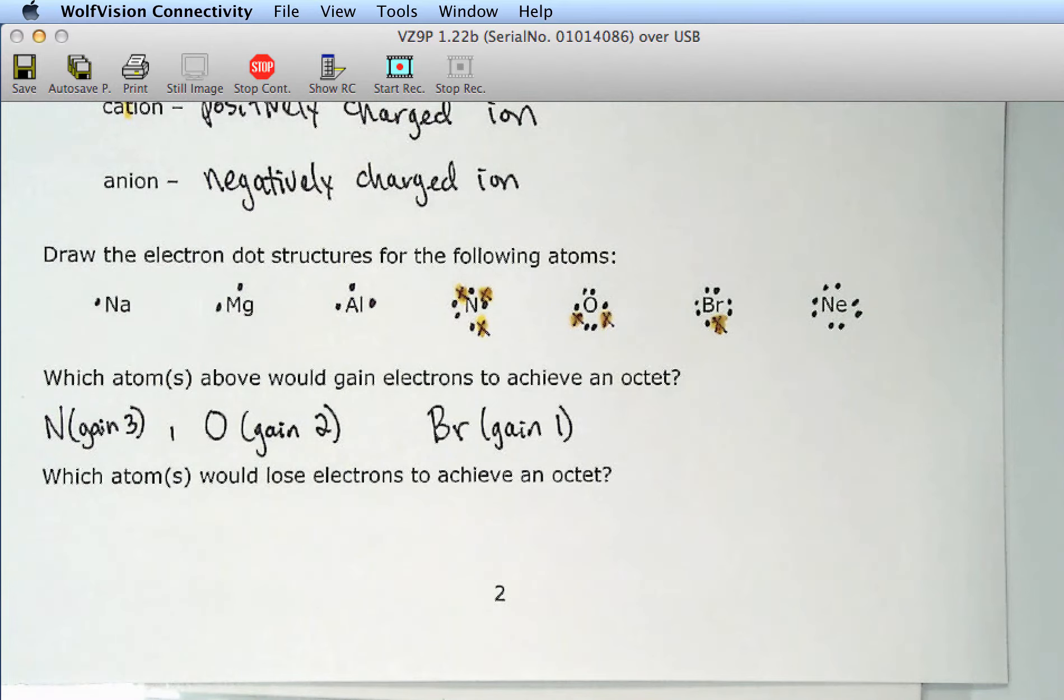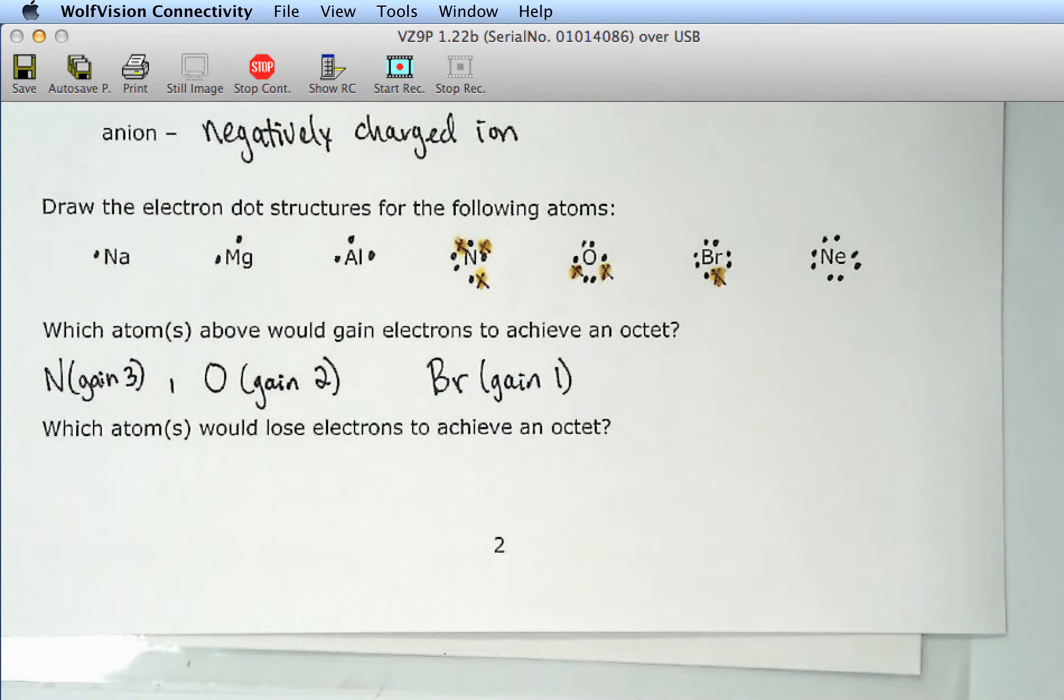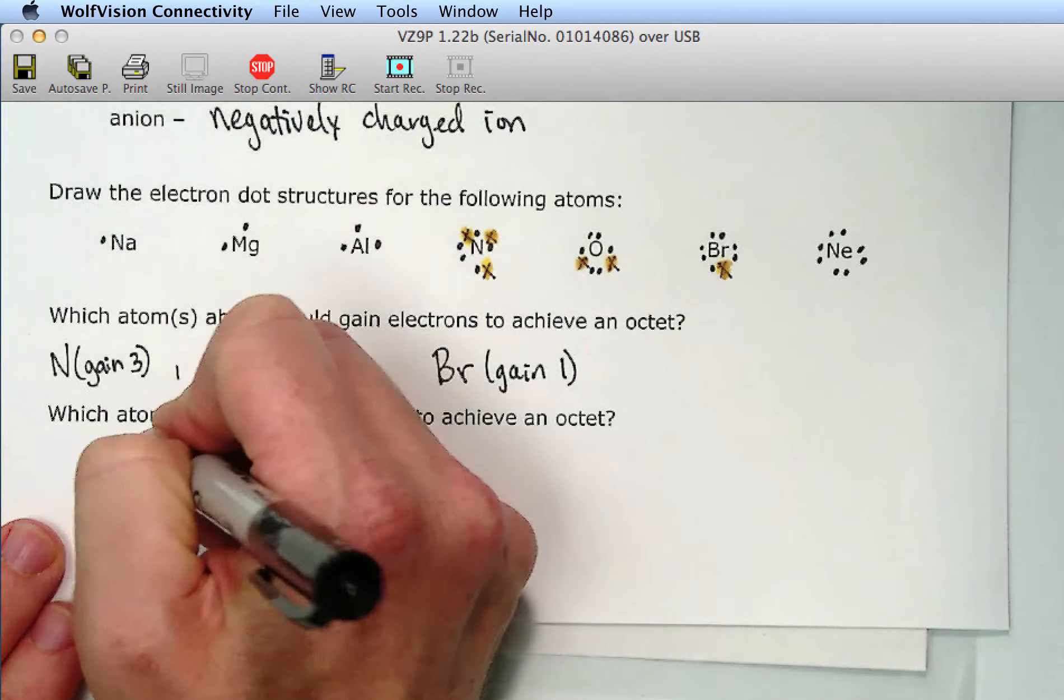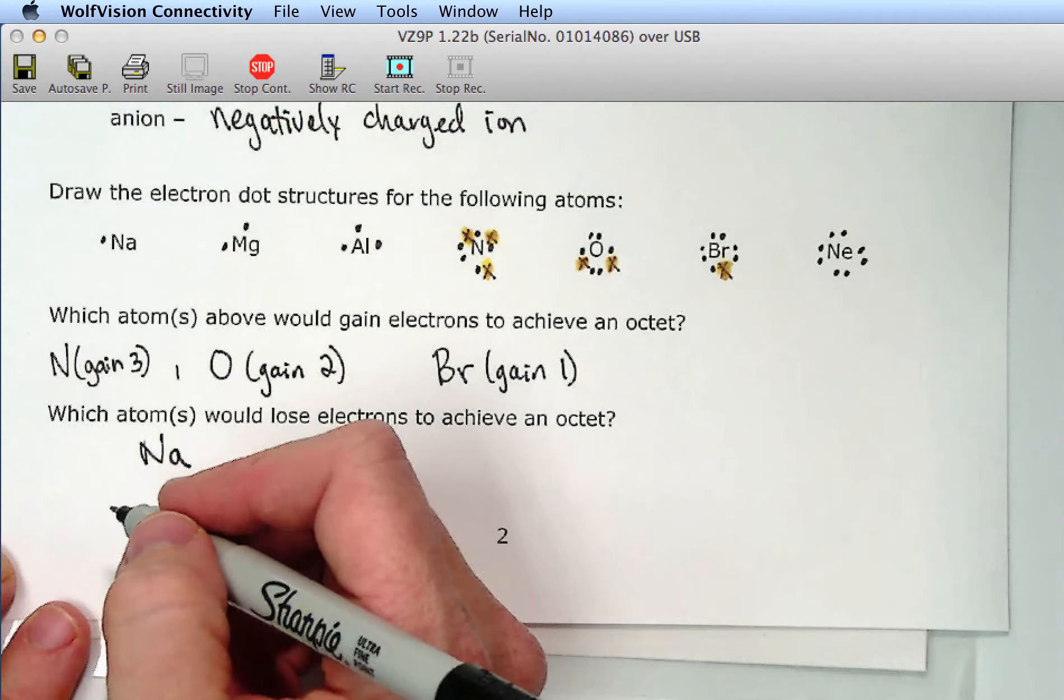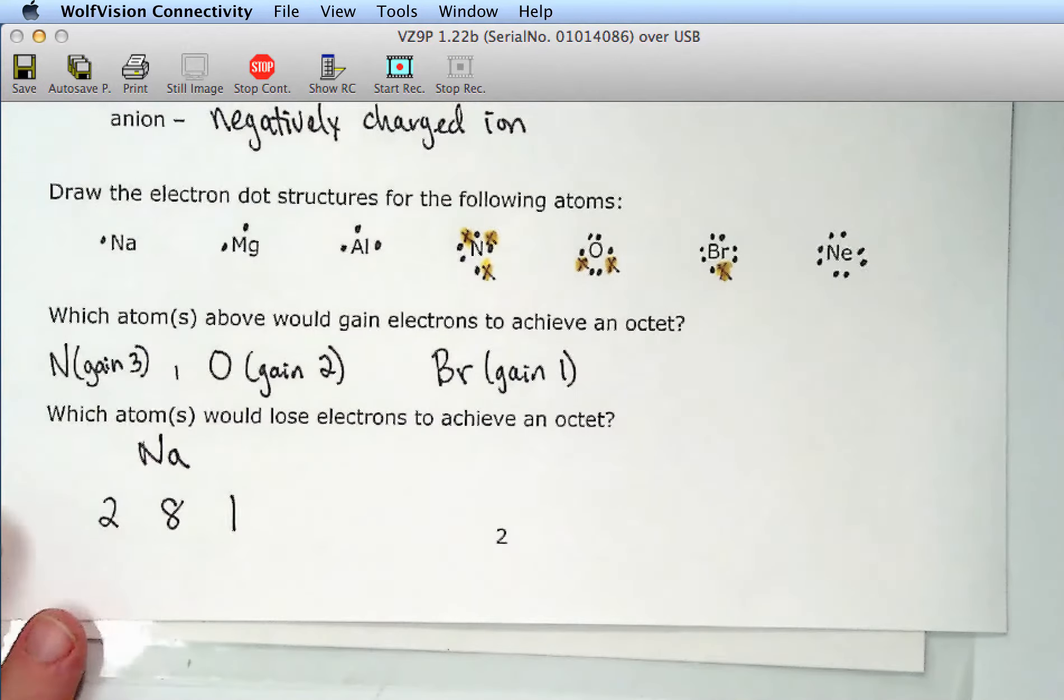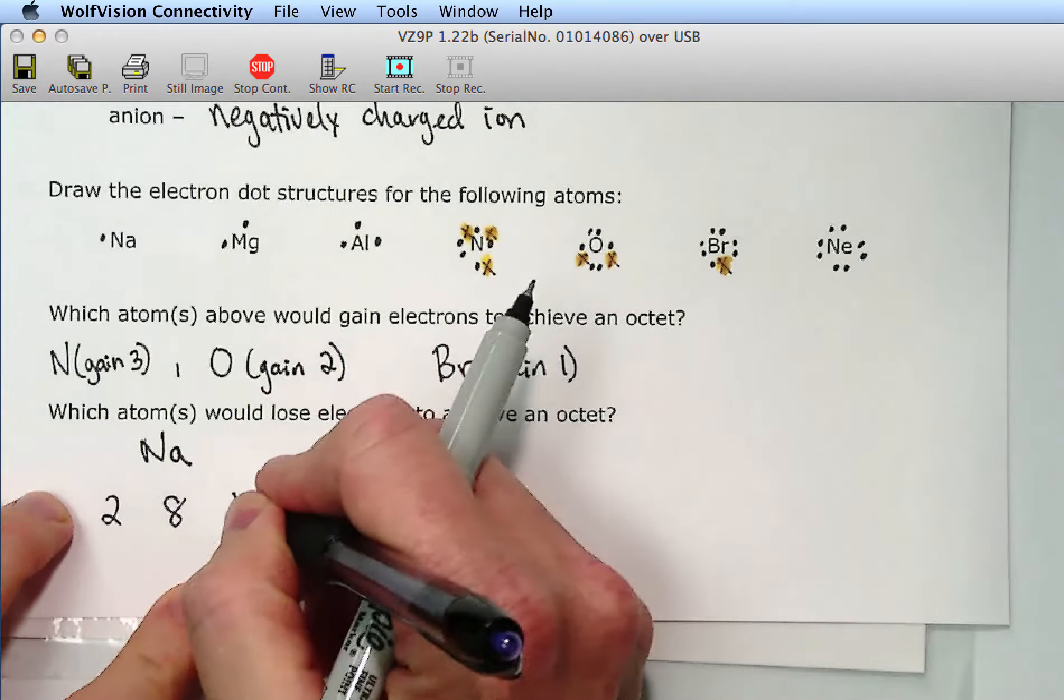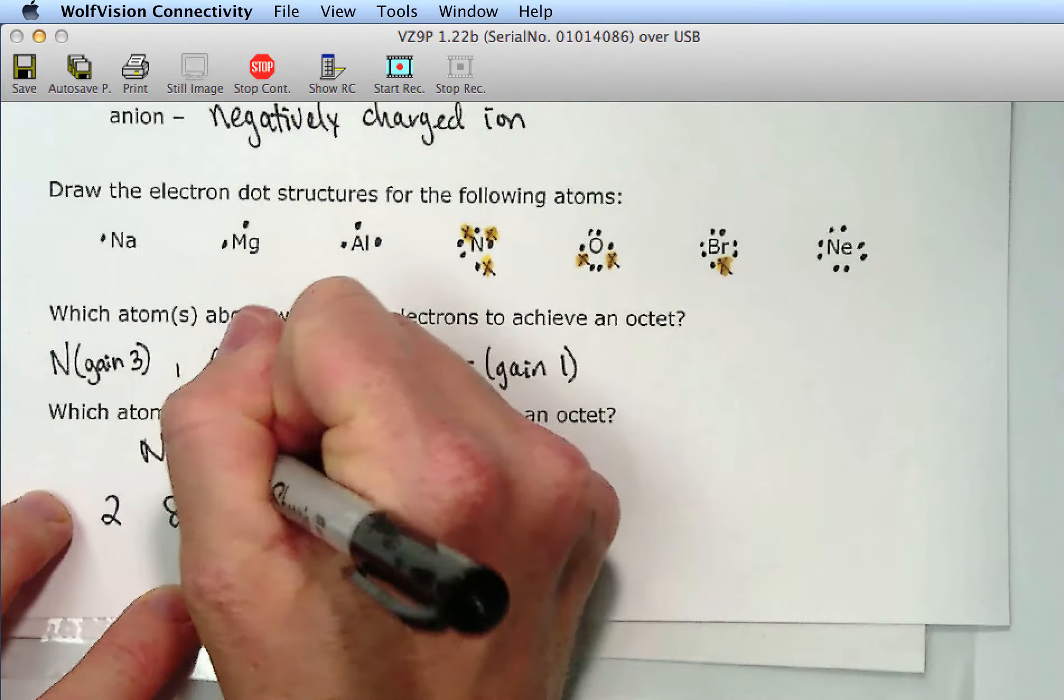So the atoms that would lose electrons to achieve an octet, it's going to be a lot quicker to get an octet if they just lose electrons, would be sodium. Now, sodium, remember the electron configuration of sodium is 2, 8, 1. So if sodium loses that one electron, it's going to have an octet. So at first glance, it seems like, wait, wait a second, why is that? Now, according to my electron dot diagram, I won't have any electrons, but sodium will have an octet. It just goes up to the next shell. So if sodium loses that one, it becomes stable.